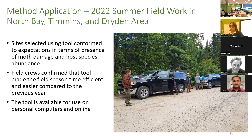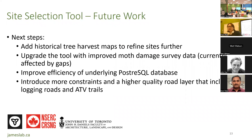The tool is available for use on personal computers and online, though it's currently quite slow online — that's something we're working on, and it works much better on a personal computer. Future work includes: adding harvest layers since crews can't visit harvested sites; upgrading the tool with improved survey data to fill aerial survey gaps using satellite data; improving database efficiency for the online version; and getting a higher-quality road layer that includes all logging roads, updated and including ATV trails.